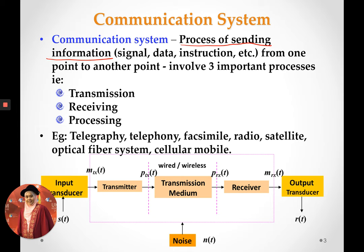It always involves these three important processes. First is transmission — how the message will be delivered. Second is receiving — how the delivered message will be received. And third is how the messages will be processed so that they can go through the transmission and receiving processes.